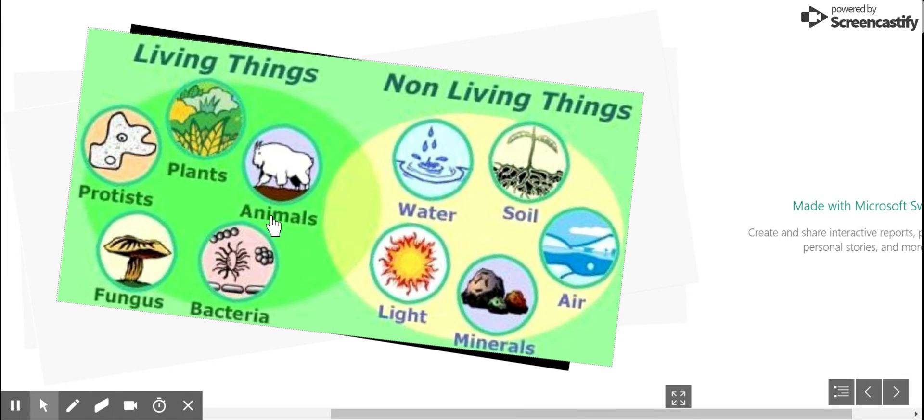Last recap, living things, biotic factors: protease, plants, animals, bacteria, fungus. Abiotic factors, non-living things: water, soil, air, minerals, light.